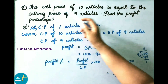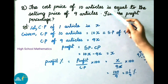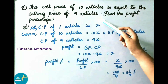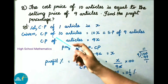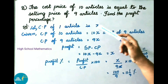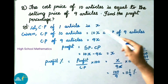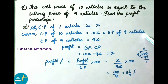Question number 8: The cost price of 10 articles is equal to the selling price of 9 articles. Find the profit percentage. Solution: let cost price of 1 article be X. Given cost price of 10 articles equals selling price of 9 articles. So cost price of 10 articles is 10X, which equals selling price of 9 articles.